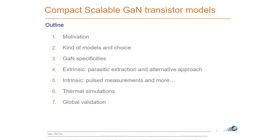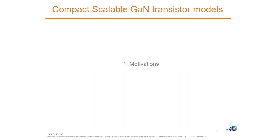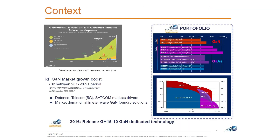We will also discuss pulse measurement, traps, and thermal simulations, which are really key for GaN because many parameters in the GaN model depend on the junction temperature — the temperature somewhere in the transistor that we need to know, which is really challenging. We will finish with some validation examples.